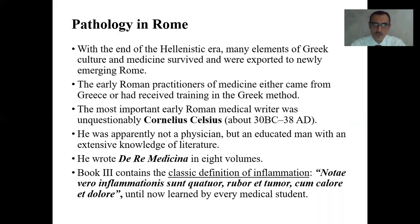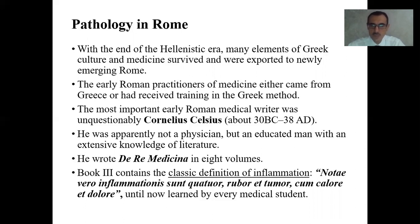Pathology in Rome. At the end of the Hellenistic era, many elements of Greek culture and medicine survived and were exported to newly emerging Rome. The early Roman practitioners either came from Greece or had received training in the Greek method. The most important early Roman medical writer was Cornelius Celsus. He was apparently not a physician but an educated man with extensive knowledge of literature. He wrote 'De Re Medicina' in eight volumes. Book three contains the classic definition of inflammation.